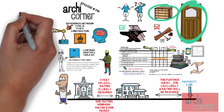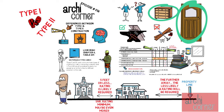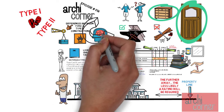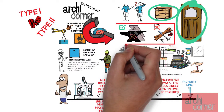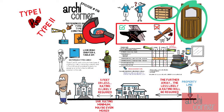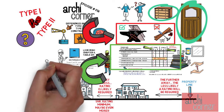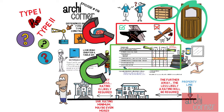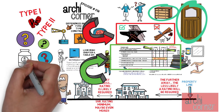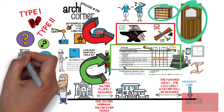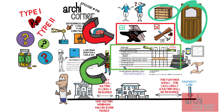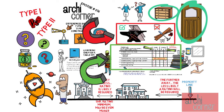So there you go — that is the basic difference between a type 1 and type 2 construction. As a quick recap: when it comes to construction materials, type 1 and type 2 have the same requirements. The main difference has to do with the rating of the elements as per table 601. Now why would you want a type 1 versus a type 2 construction, and why spend so much more money building it one way versus another? That is a great question and I've made a video about that — I will leave a link at the end of this video.